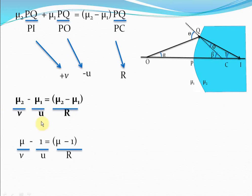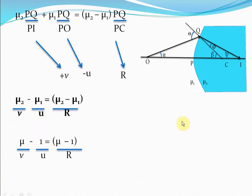V is the image distance and U is the object distance. If you take mu1 as 1 — because the refractive index of air is 1 — this is the simplified equation you get. So we have derived the basic fundamental formula for refraction at a spherical surface.